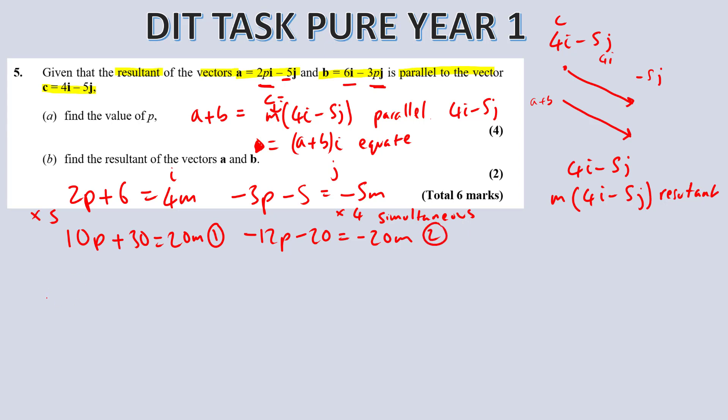So what is 1 add 2? Minus 12p minus 20 equals minus 20. So we do 1 add 2, equation 1 add equation 2. The m's will cancel. So we get left with minus 2p plus 10 equals 0. So that means 2p equals 10. And that means p equals 5.